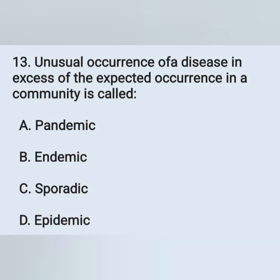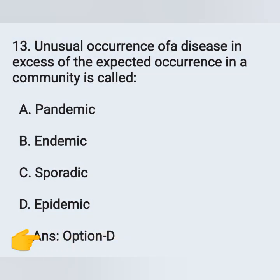Next question: unusual occurrence of a disease in excess of the expected occurrence in a community is called — option A: pandemic, option B: endemic, option C: sporadic, option D: epidemic. Unusual occurrence of a disease in excess of expected in a community is known as epidemic — option D is the correct answer.